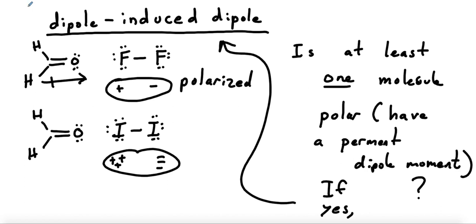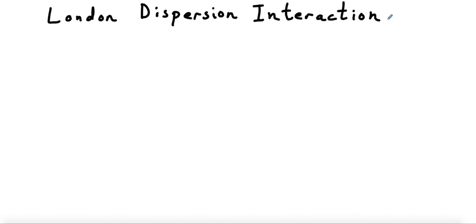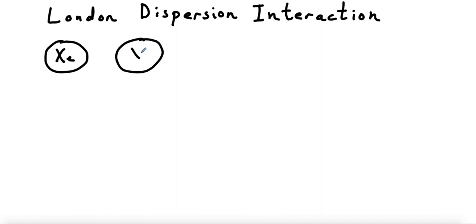Let's go on to another one: London dispersion interaction. London dispersion interaction is something that can take place between any two molecules — or any two atoms, really. So anytime we have any kind of matter, let's use xenon atoms as an example. Obviously they're just atoms, so there's no dipole — it's just a sphere. But the important thing to remember is that the electrons are in motion around the xenon, and if we take a snapshot of the electron density at any given moment, it might not be symmetric.